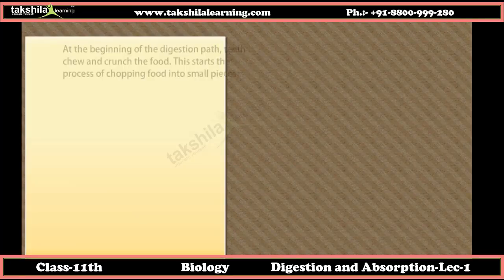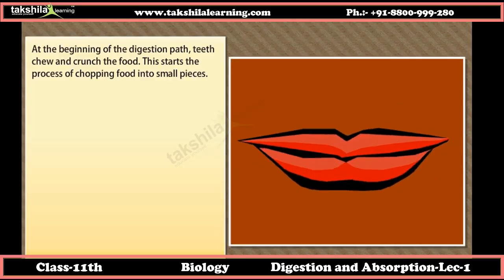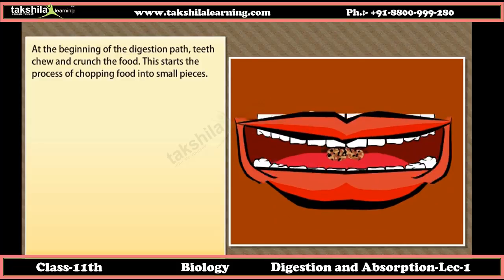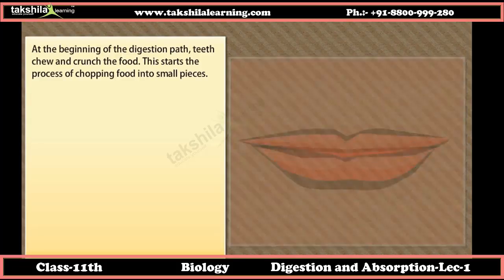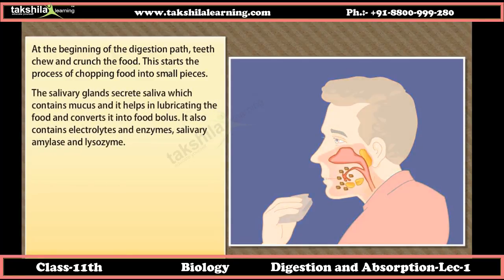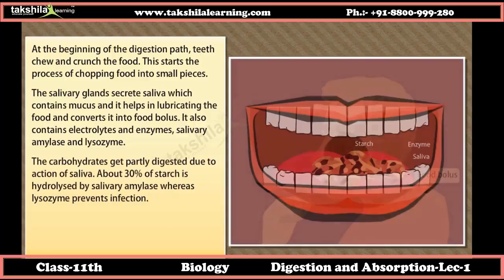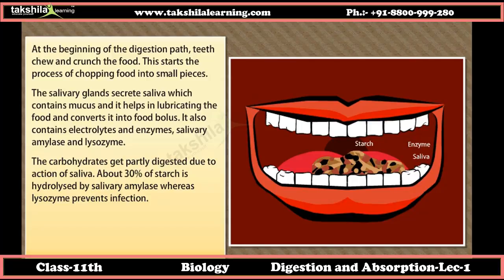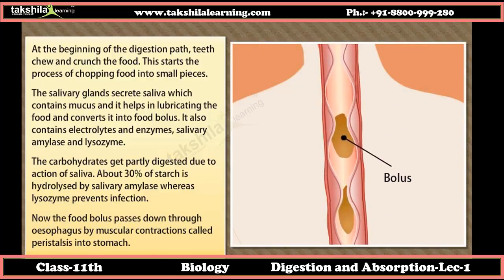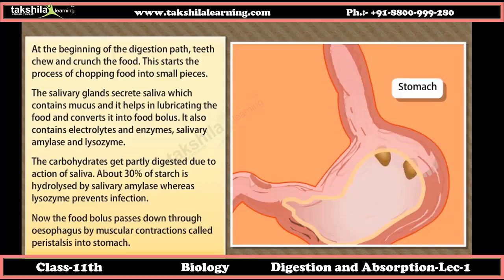At the beginning of digestion, teeth chew and crunch the food into small pieces. The salivary glands secrete saliva containing mucus, which lubricates food and converts it into a food bolus. Saliva also contains electrolytes, salivary amylase, and lysozyme. About 30% of starch is hydrolyzed by salivary amylase, while lysozyme prevents infection. The food bolus then passes down through the esophagus by muscular contractions called peristalsis into the stomach.